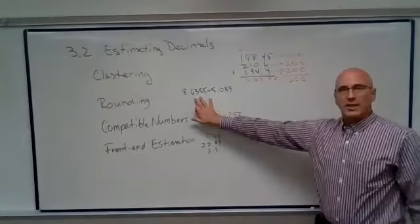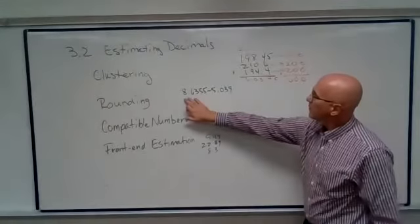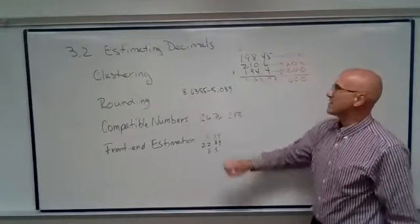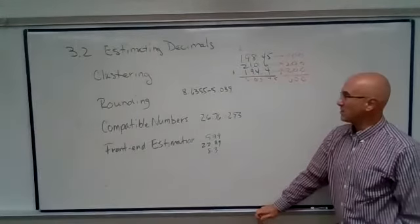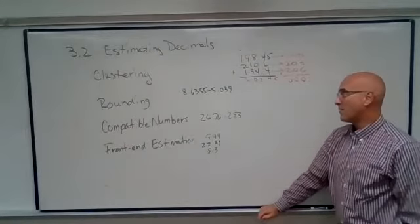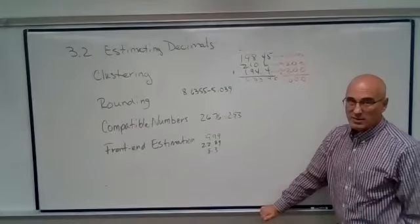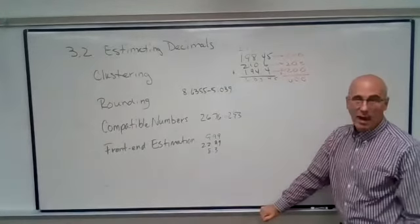So let's take a look at this problem: 8 and 6,355 ten-thousandths minus 5 and 39 thousandths. That's a lot of math to do.